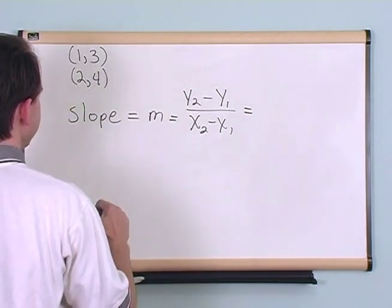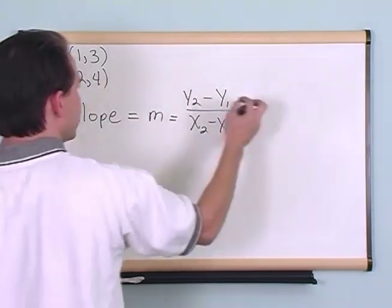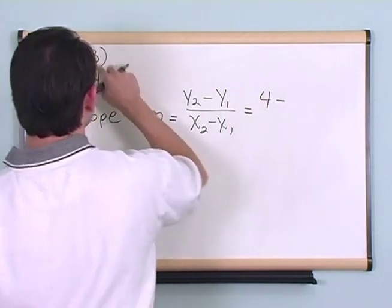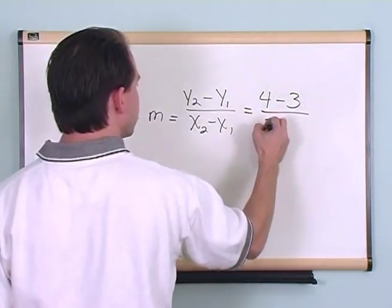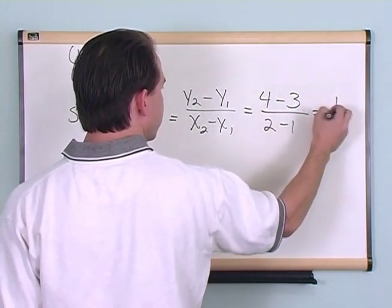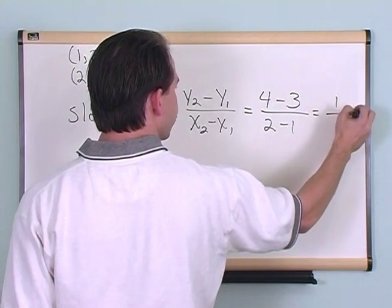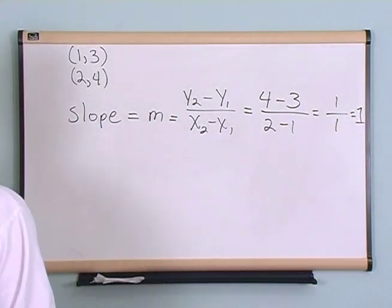So let's do that for a second. Okay, let's take y2, I'm going to say 4 minus 3, over 2 minus 1. 4 minus 3 is 1, 2 minus 1 is 1, so the slope of this thing is 1. Okay, the slope of that thing is 1.